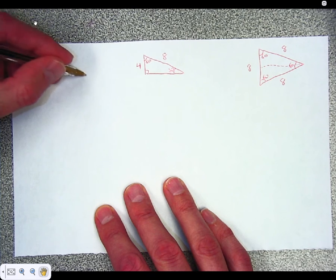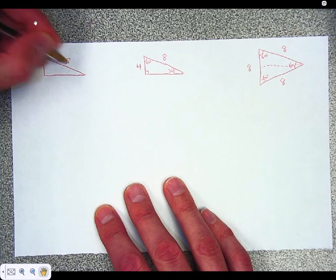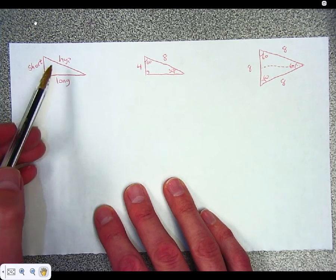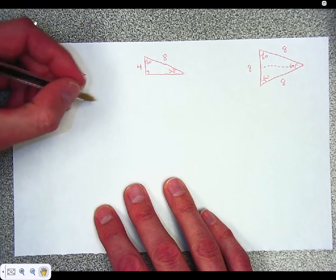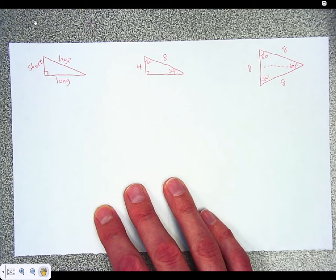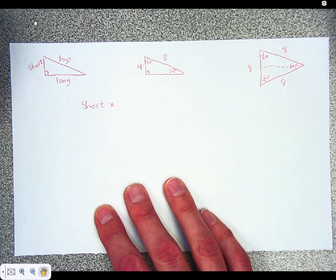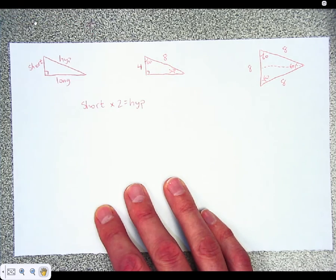And that's kind of the first relationship that we need to have for these 30-60-90 triangles. Is that on a 30-60-90 triangle, you're going to have a hypotenuse, you're going to have a short leg, and you're going to have a long leg. And the relationship between the hypotenuse and the short leg is that the hypotenuse is always twice as long as the short leg. So if you take the short leg, there's a reason I'm going over this, I promise. The short leg times 2, you're going to equal the hypotenuse.